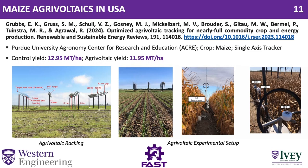Another study conducted at Purdue University in the USA was done for maize. It showed that the yield under Agrivoltaics was almost 11.95 metric tons, whereas the control yield was almost 12.95 metric tons — so there was a little bit of yield reduction, but it wasn't that much. They used a single-axis tracking system.